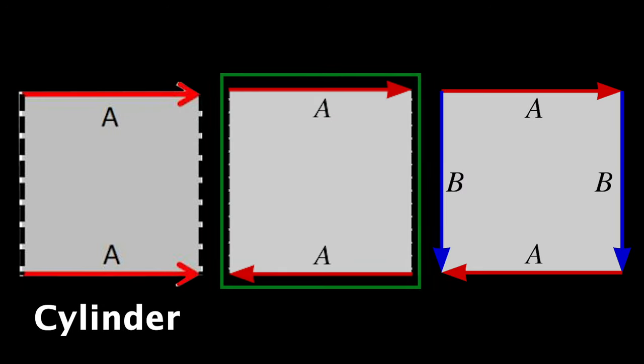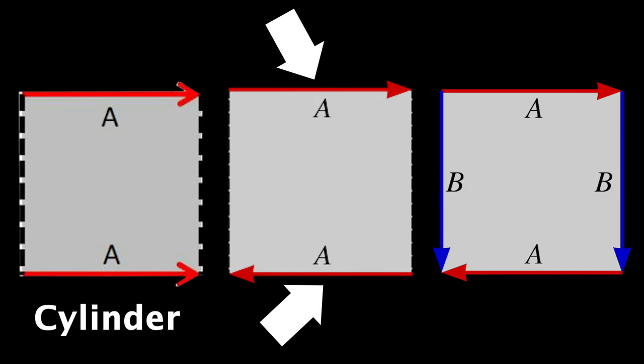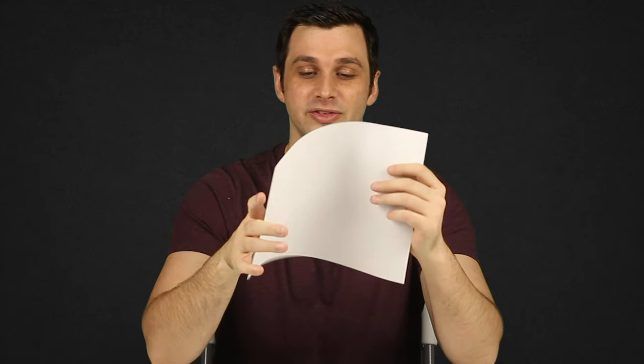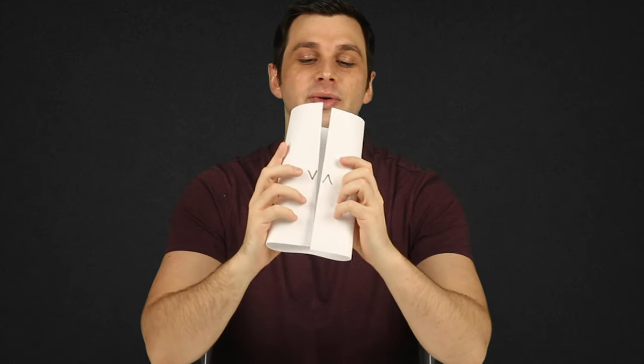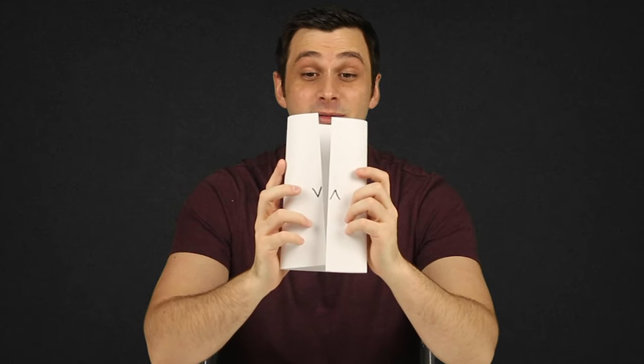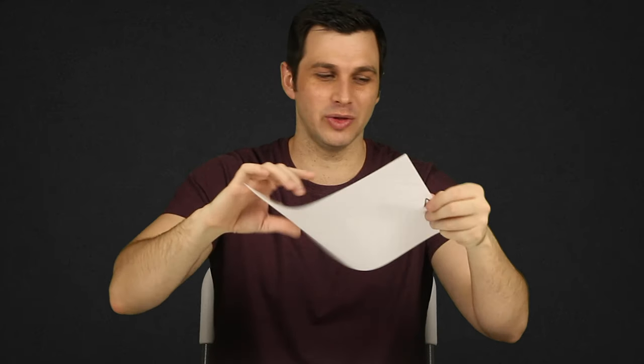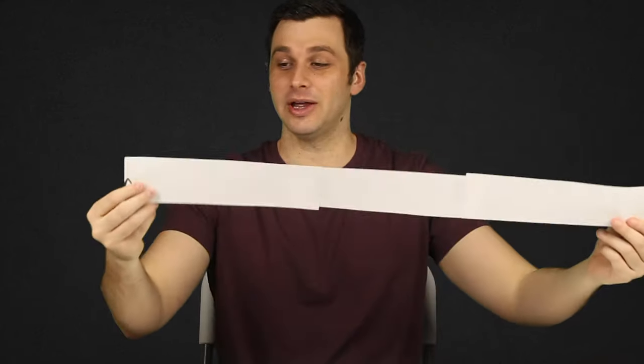Now this next one is new for us, because it says we have to connect these opposite sides together, but not like before. So if we try like before with the cylinder, then the arrows will be facing opposite directions — that's not allowed. They have to be facing the same way after doing the connection. So in order to make that possible, we'd have to do the same thing but put a half twist in the paper.